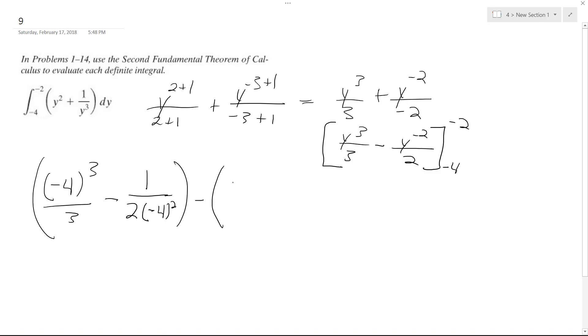Minus negative two cubed over three minus one over two times negative two squared. So we end up with this.